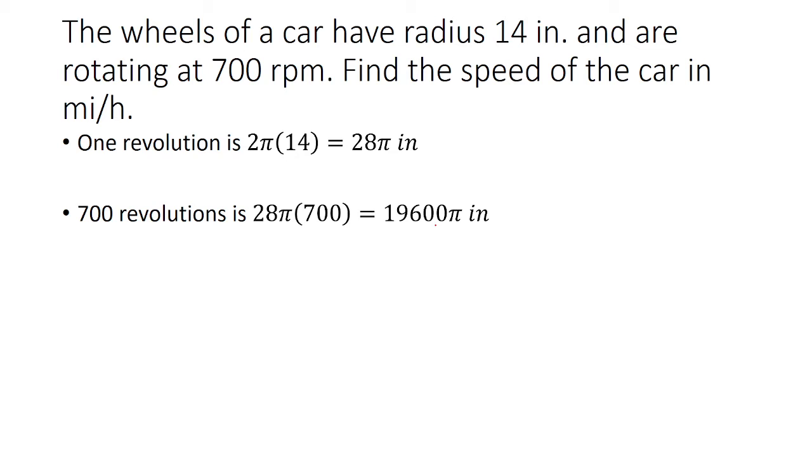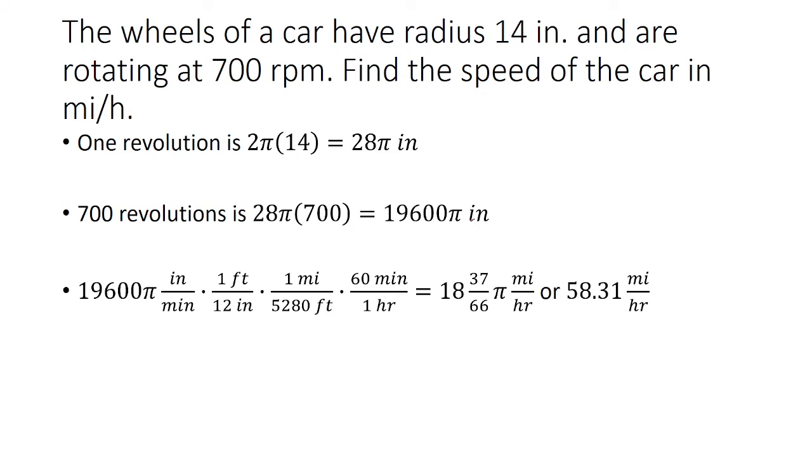From here, we want to find the speed of the car in miles per hour. So in one minute, we have 700 revolutions, which is 19,600π inches. And so the units we have here is inches per minute, since the revolutions are per minute.